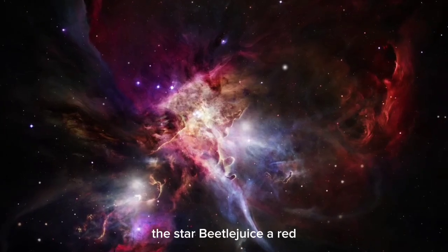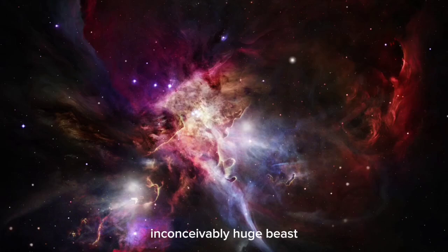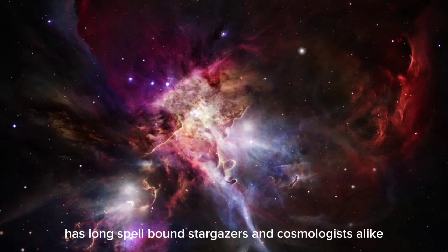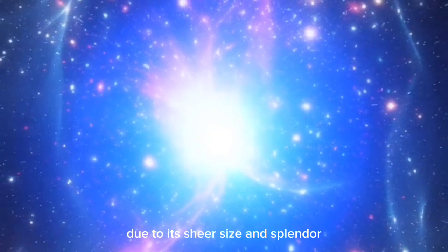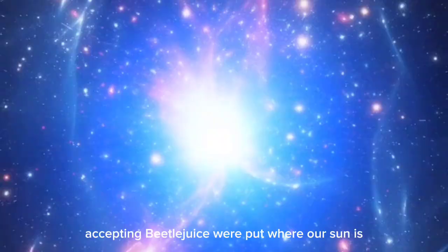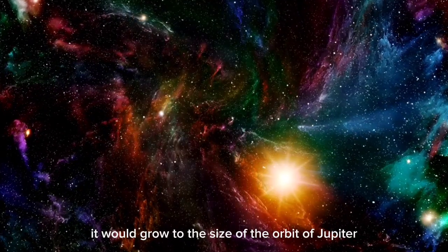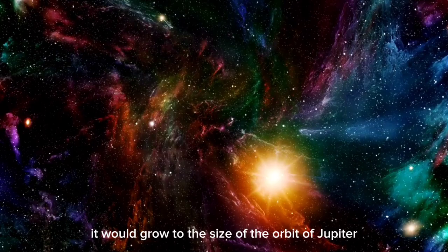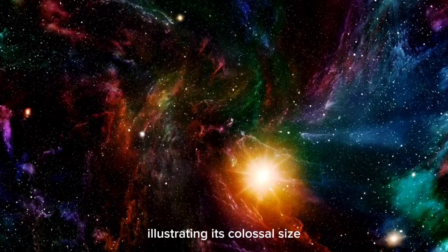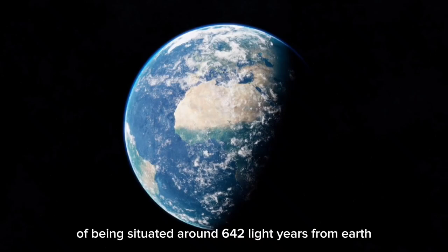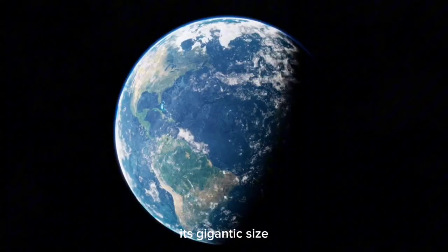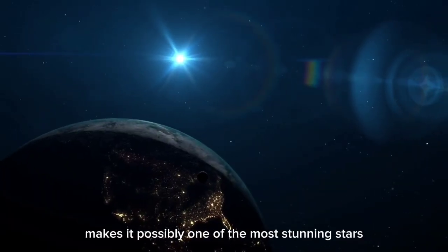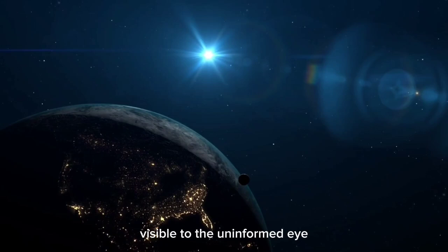The star Betelgeuse, a red, inconceivably huge beast, has long spellbound stargazers and cosmologists alike due to its sheer size and splendor. If Betelgeuse were put where our sun is, it would grow to the size of the orbit of Jupiter, illustrating its colossal size. Despite being situated around 642 light-years from Earth, its gigantic size makes it possibly one of the most stunning stars visible to the unaided eye.